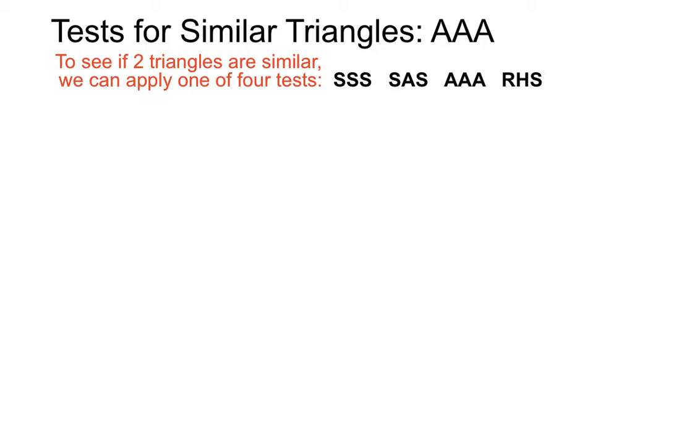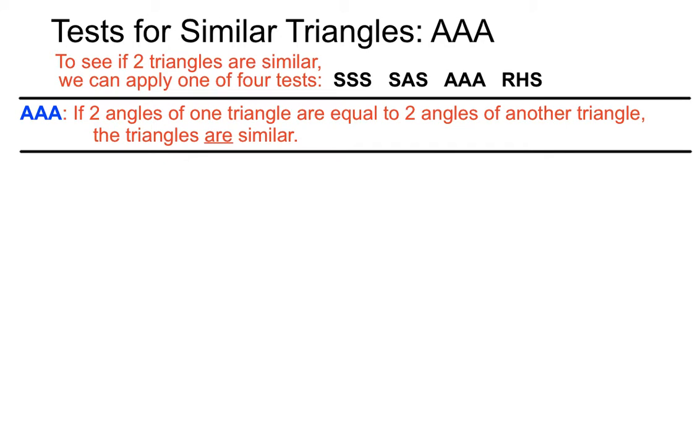And we'll have another video on RHS for testing for similar triangles. This one states that if two angles of one triangle are equal to two angles of another triangle, the triangles are similar.